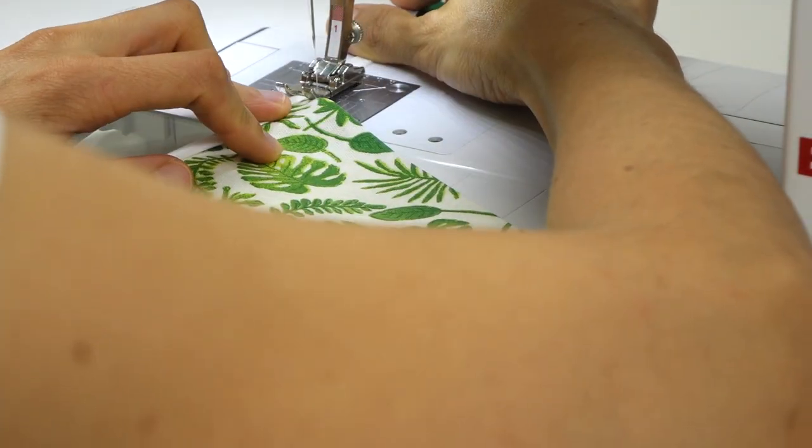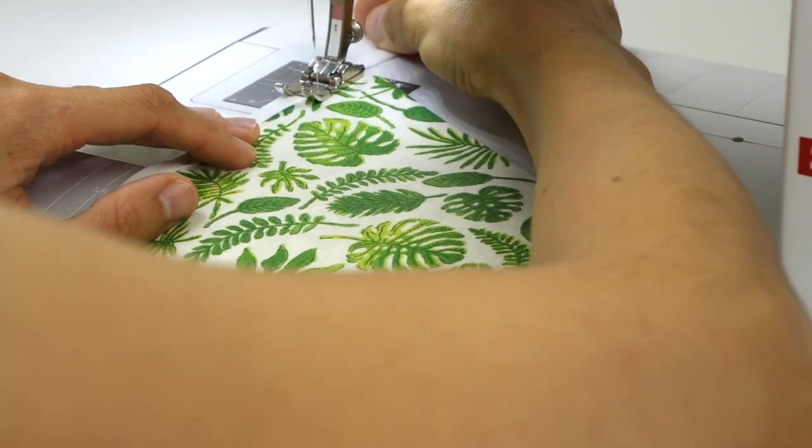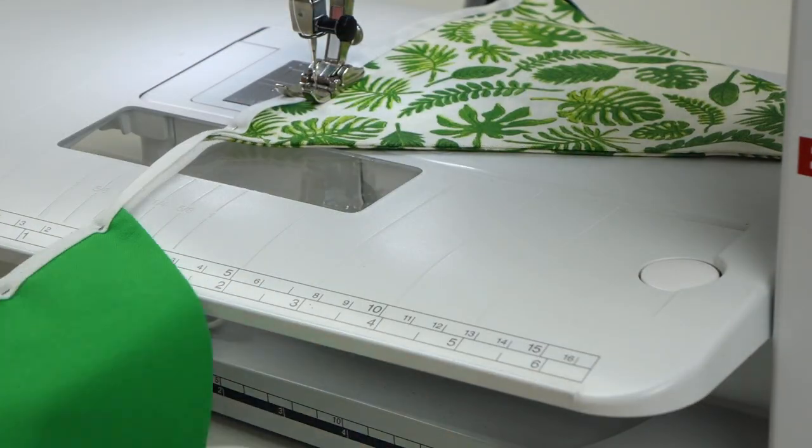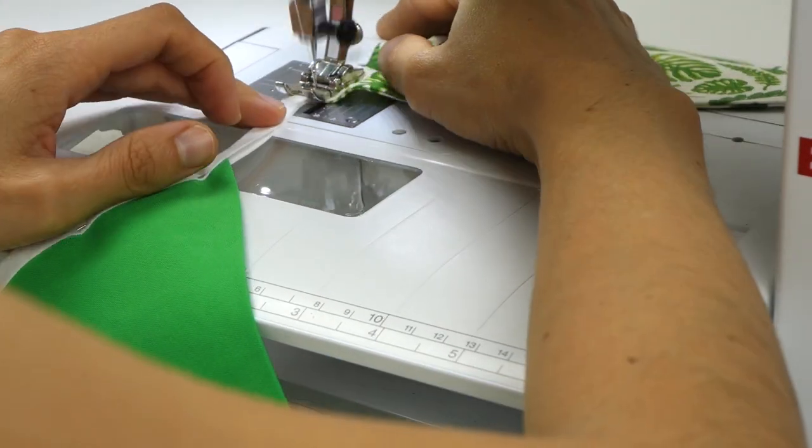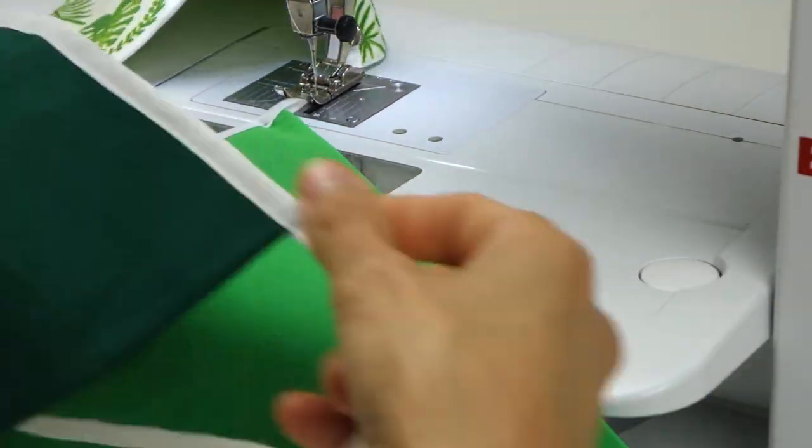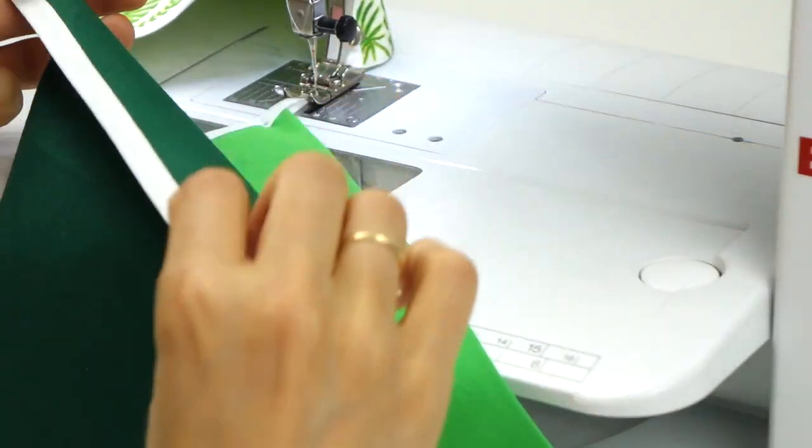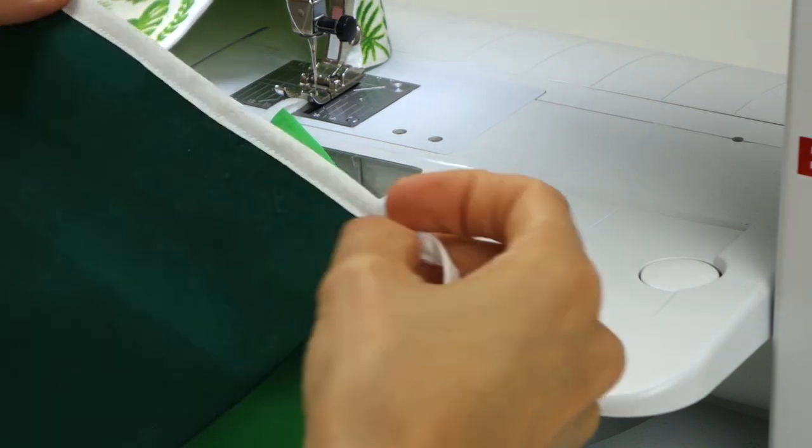Voila, we are going to sew like this until the end of the bunting. The length depends on how many flags you prepared, on their width and on how much gap you decide to leave between them. Be patient, take your time and check the other side of your flags often to make sure the stitches are perfectly placed there too.